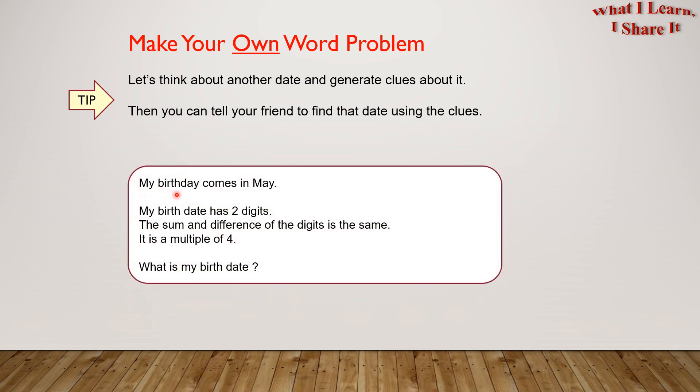My birthday comes in May. My birth date has 2 digits. The sum and difference of the digits is the same. It is a multiple of 4. What is my birth date?